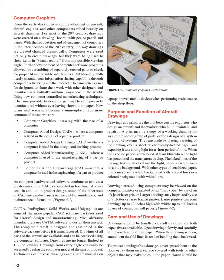In addition to product design, some other uses of CAE are product analysis, assembly, simulations, and maintenance information. CATIA, Pro Engineer, SolidWorks, and Unigraphics are some of the more popular CAD software packages used for aircraft design and manufacturing. Most airframe manufacturers use CATIA software to design their aircraft. The complete aircraft is designed and assembled in the software package before it is manufactured. Drawings of all parts of the aircraft are available and can be accessed using the computer software. Drawings are no longer limited to one, two, or three views — drawings from every angle can easily be accessed using the computer model. Technicians can access drawings and aircraft manuals on laptops or even mobile devices when performing maintenance on the shop floor.